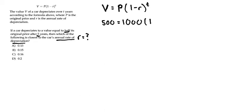We can fill in the rest of the formula. We plug in 500 for V, 1000 for P, then we have 1 minus R (and R is what we're looking for, so we'll leave it as R), and T equals 5 since it's after five years.